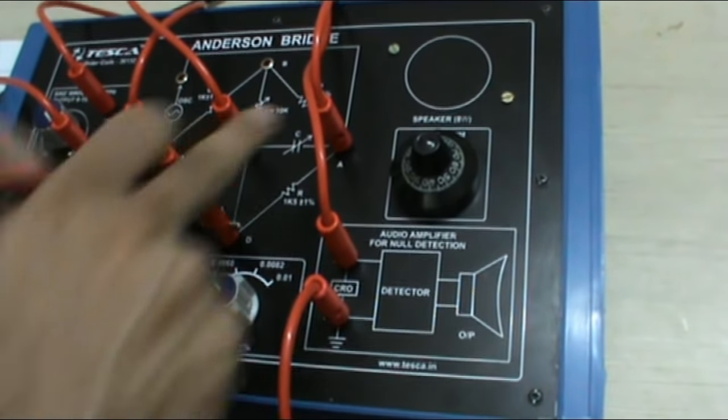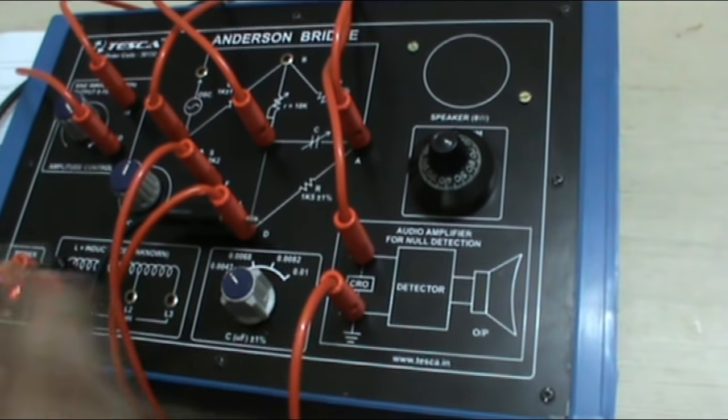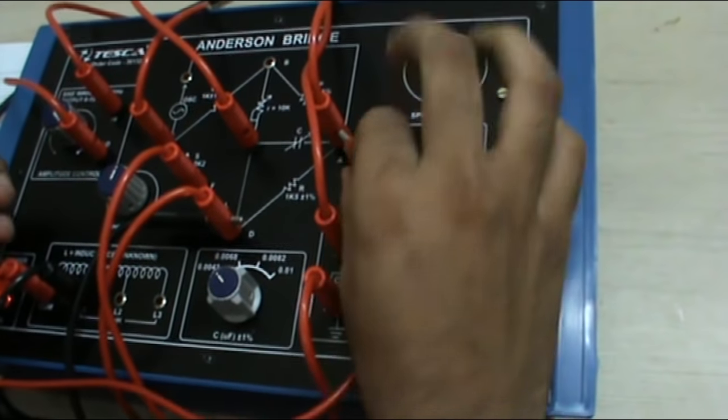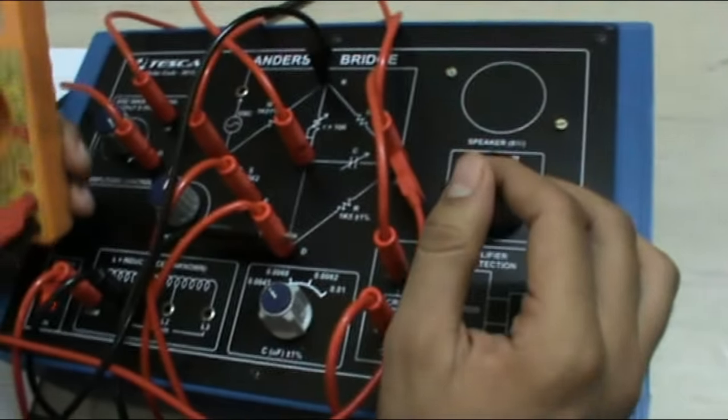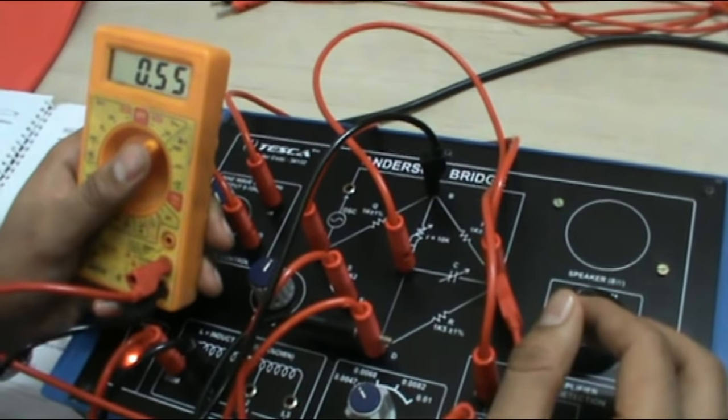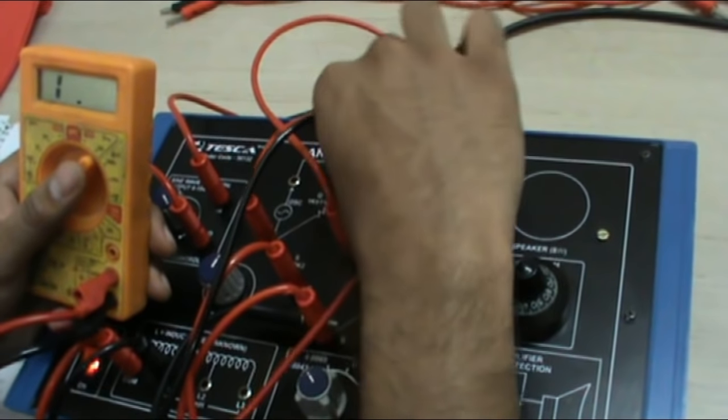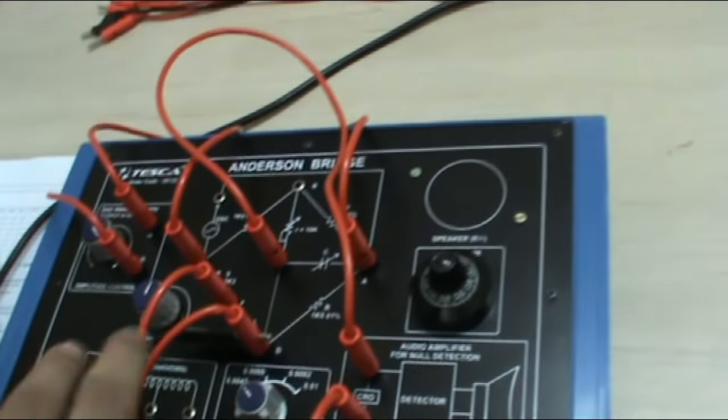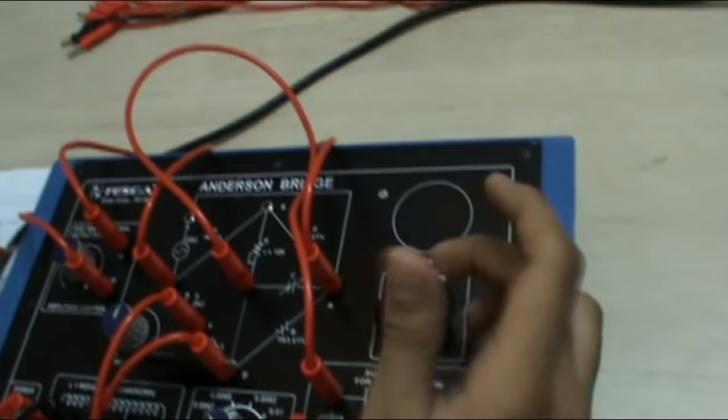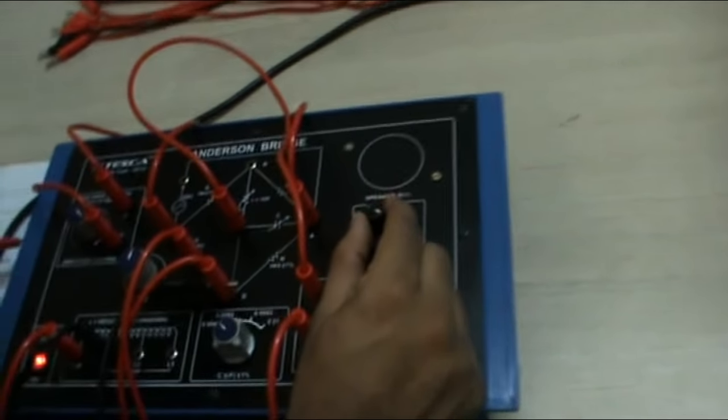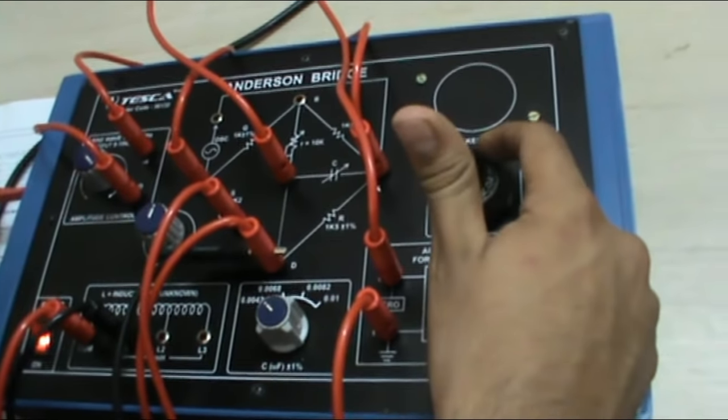We can measure the values of P with the DMM by keeping one port connecting to A and second to B. This is approximately 0.55kΩ. Similarly we can calculate the value of Q.